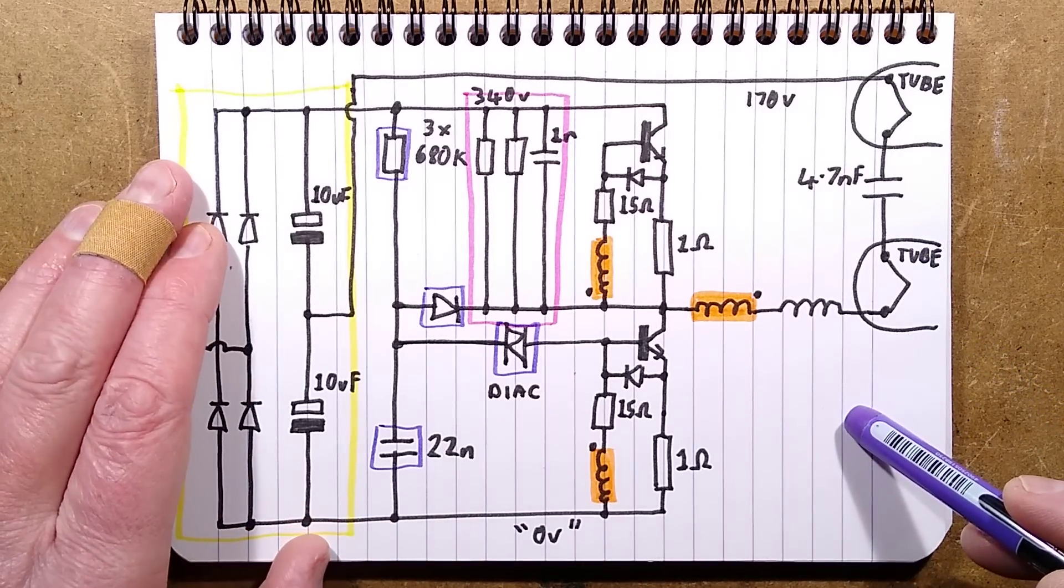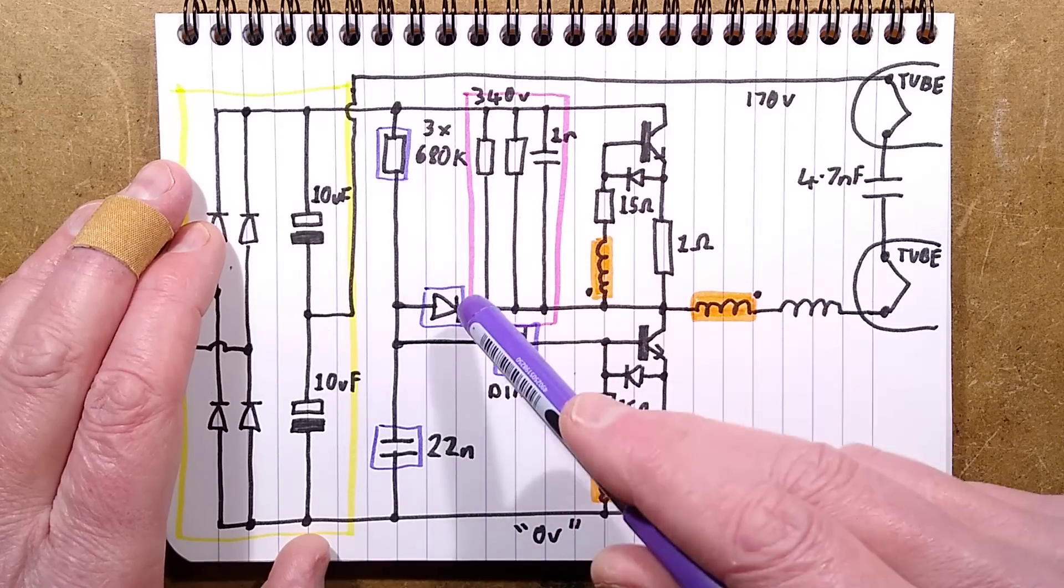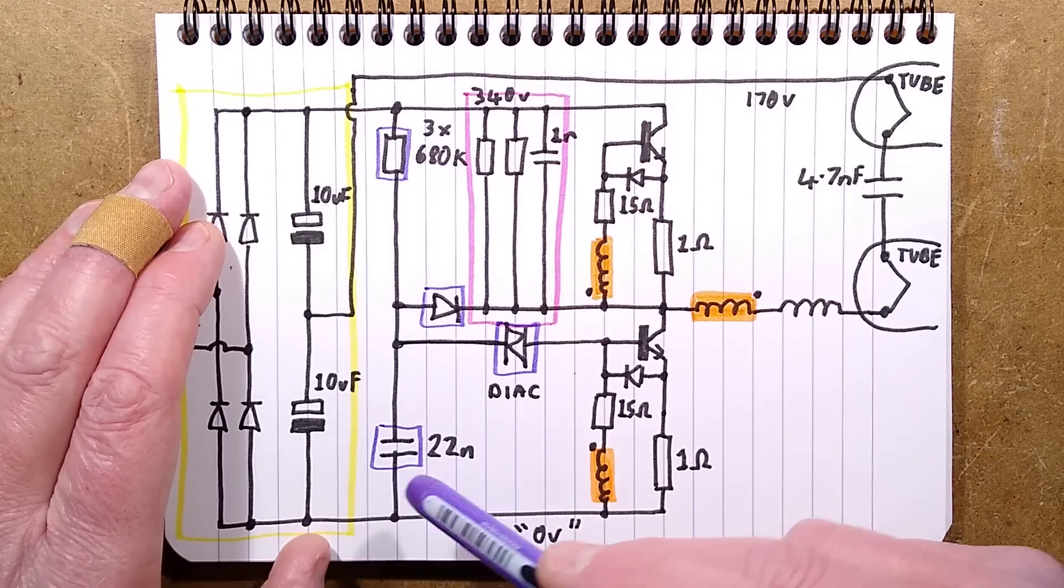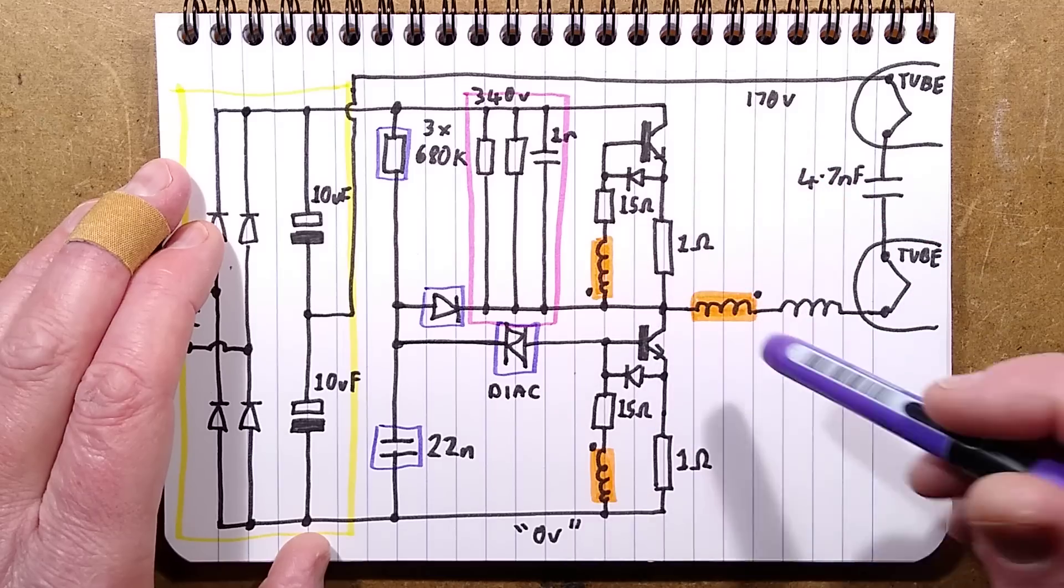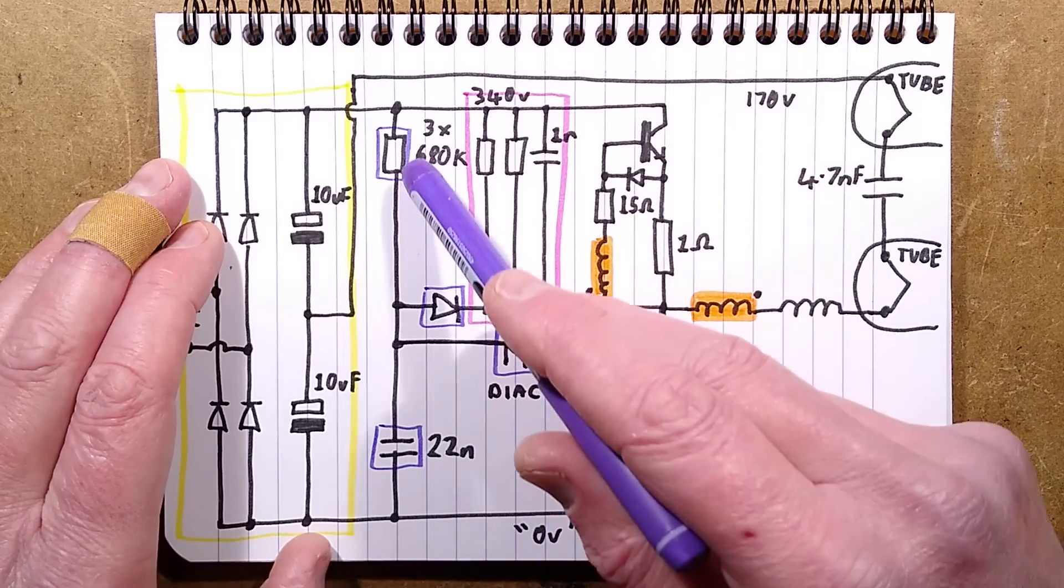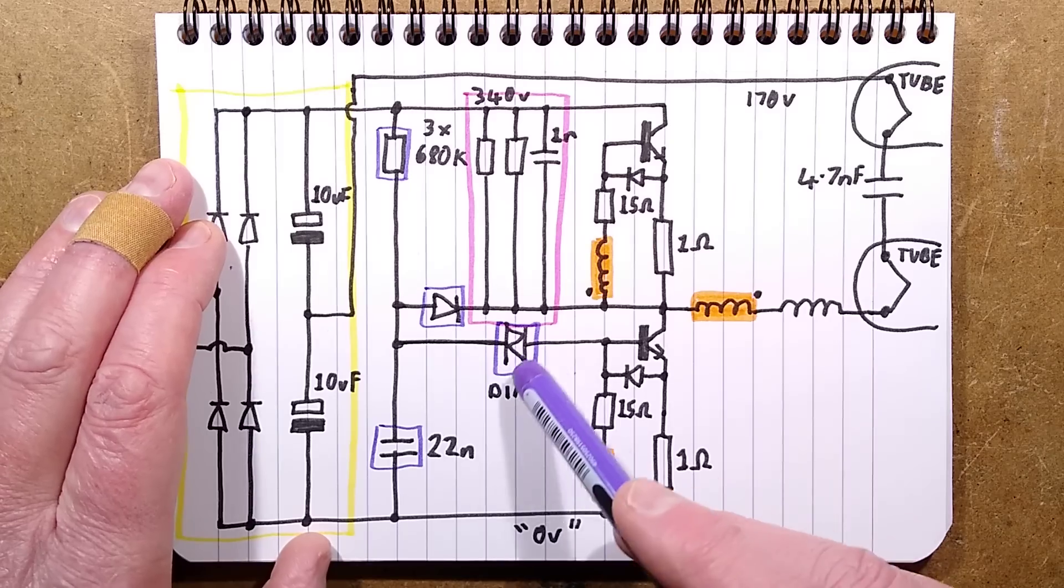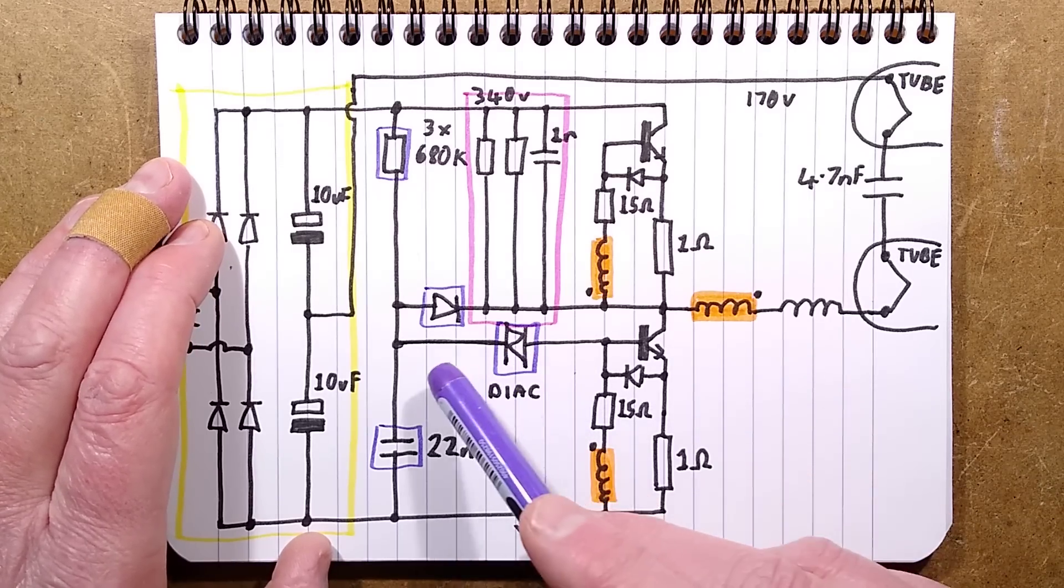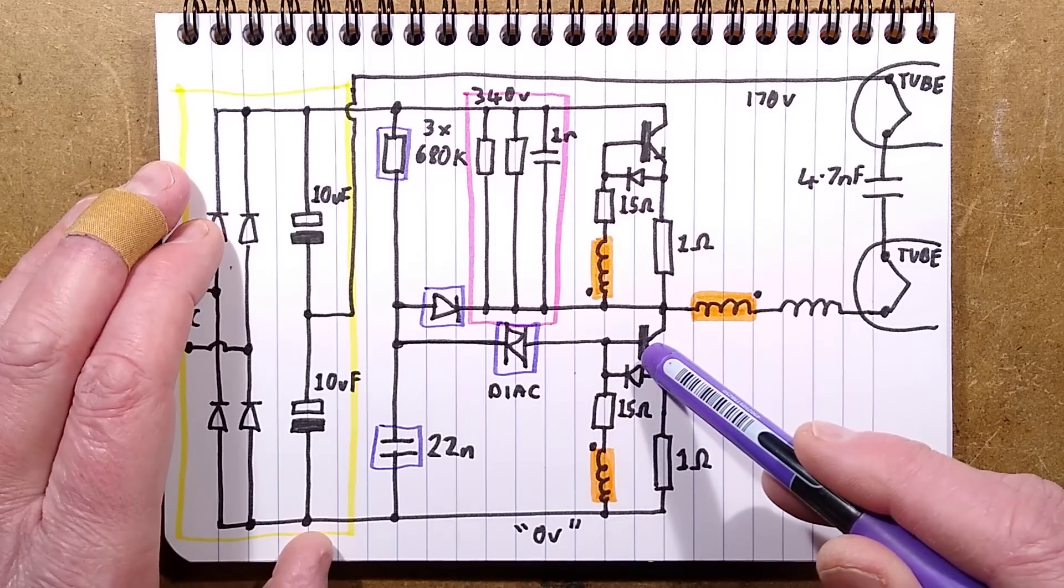So let's take a look at the startup circuit first. That is based, I've coloured it purple here, that is based on this resistor charging this capacitor up. So initially, when you turn it on, it's unlikely that the circuit will just start oscillating itself. So in this case, this resistor charges up this capacitor until it reaches the threshold voltage of this diac, which then triggers at around probably about 32 volts, and it suddenly dumps that small value capacitor into the base of this transistor, turning the transistor on.